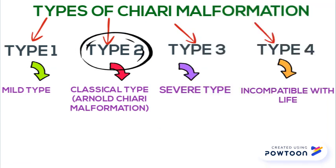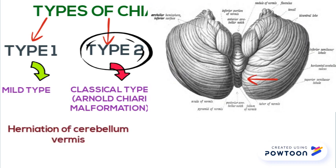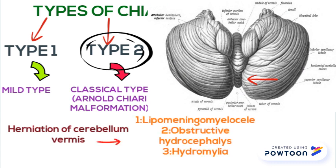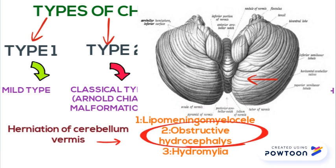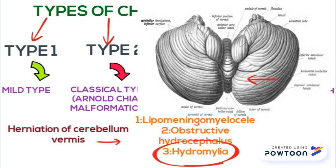Type 2 Chiari malformation, also called Arnold Chiari malformation, is due to herniation of the cerebellar vermis. It is associated with lipomyelomeningocele, obstructive hydrocephalus, and hydromyelia. Lipomyelomeningocele is basically a type of spina bifida, which is a neural tube defect. Obstructive hydrocephalus is an increase in CSF due to obstruction in the flow. And hydromyelia is defined as a fluid-filled cavity in the central canal.